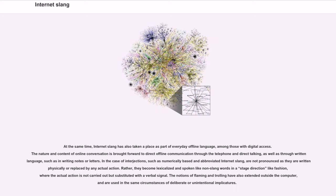Internet slang has also taken a place as part of everyday offline language among those with digital access. The nature and content of online conversation is brought forward to direct offline communication through the telephone and direct talking, as well as through written language such as writing notes or letters. In the case of interjections, numerically based and abbreviated Internet slang are not pronounced as written or replaced by any actual action. Rather, they become lexicalized and spoken like non-slang words in a staged direction-like fashion. The notions of flaming and trolling have also extended outside the computer, used in the same circumstances of deliberate or unintentional implications.